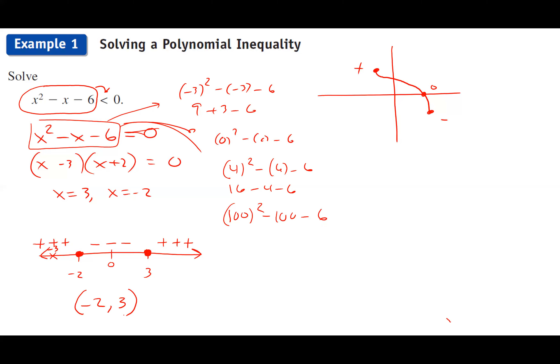That's the algebra method. A couple of notes: the dots on the number line mean the expression equals zero there. Also notice the inequality is strictly less than zero, not less than or equal to. If it were less than or equal to zero, I would include -2 and 3, using bracket notation. But since it's strictly less than, I use parentheses and don't include those endpoints.